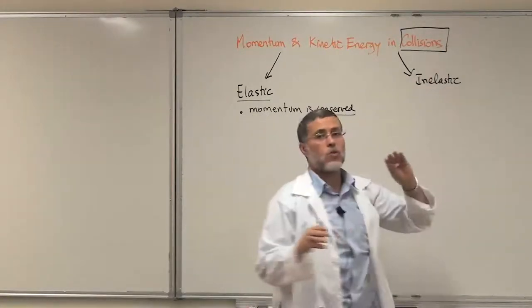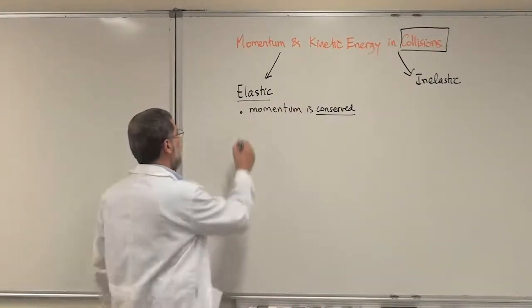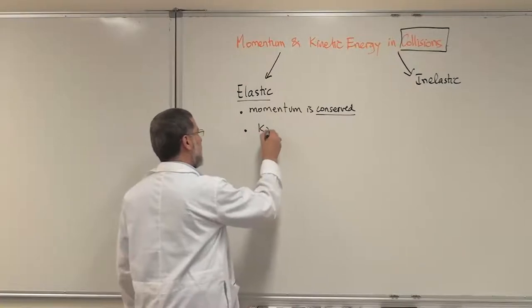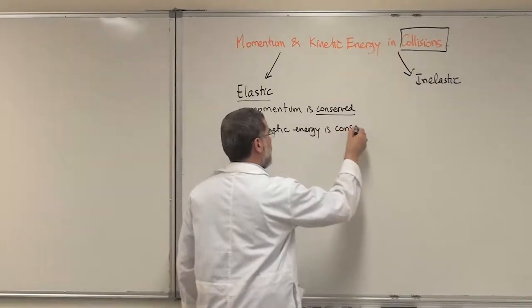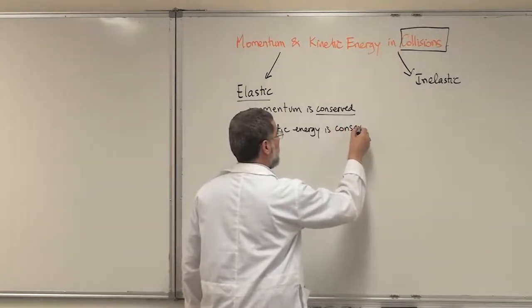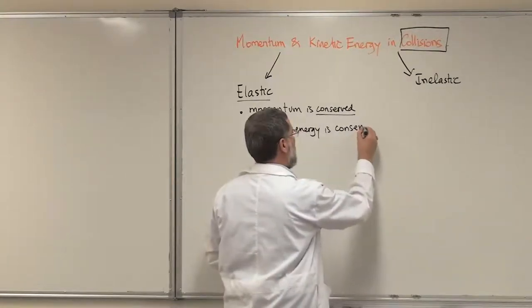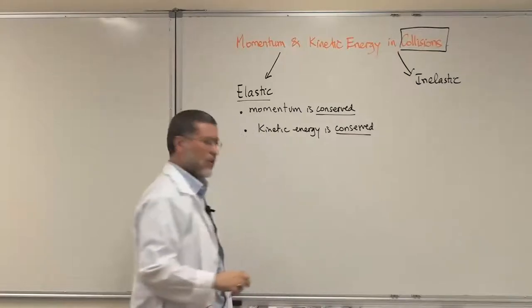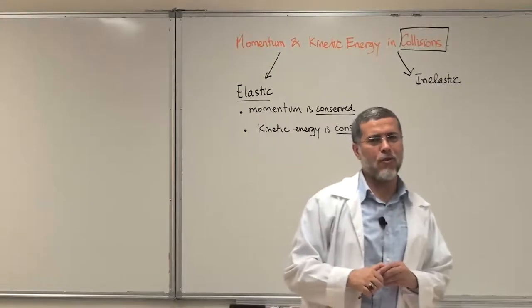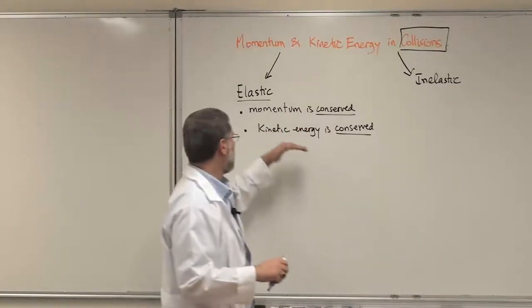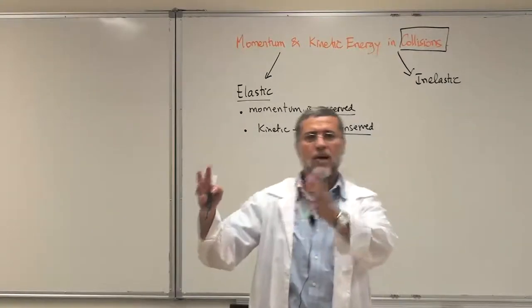After what? After the collision. So we have a situation before the collision and the situation after the collision. We say momentum is conserved, and also kinetic energy is conserved. Both of them are conserved in the elastic collision. Kinetic energy conserved means the kinetic energy before the collision and after the collision are the same.